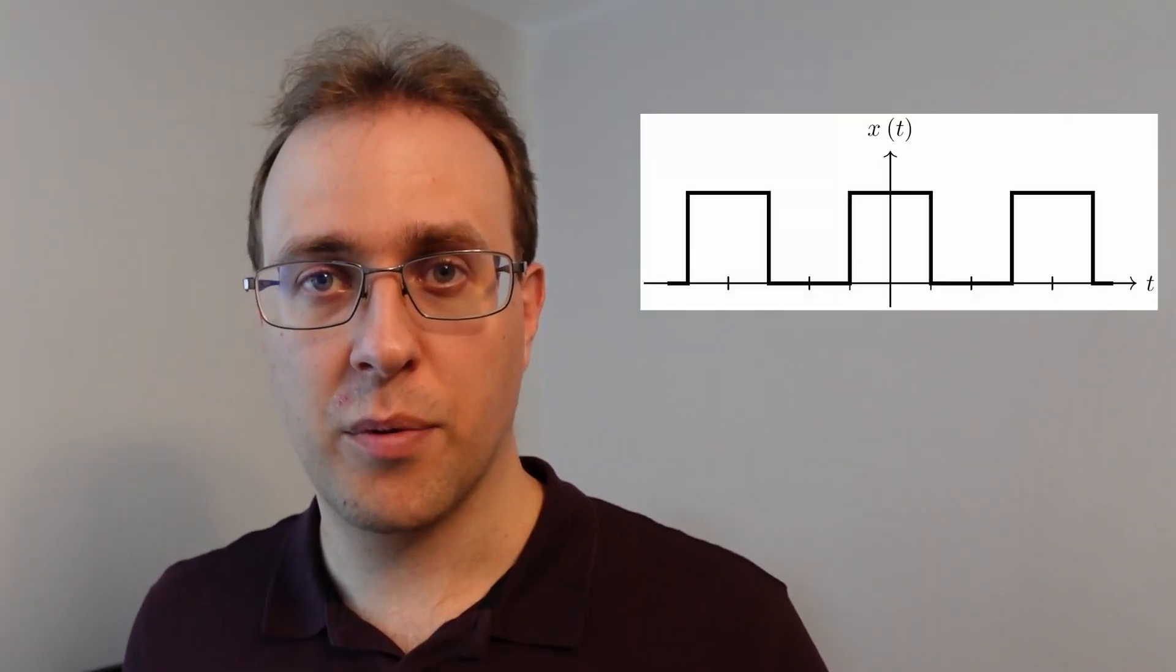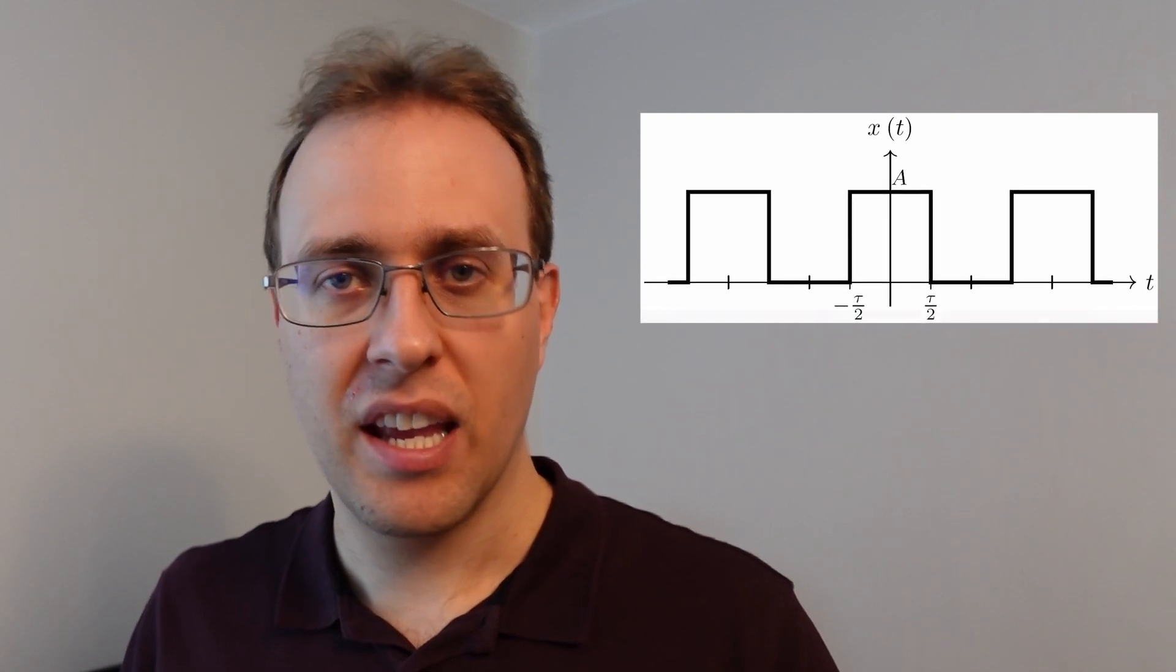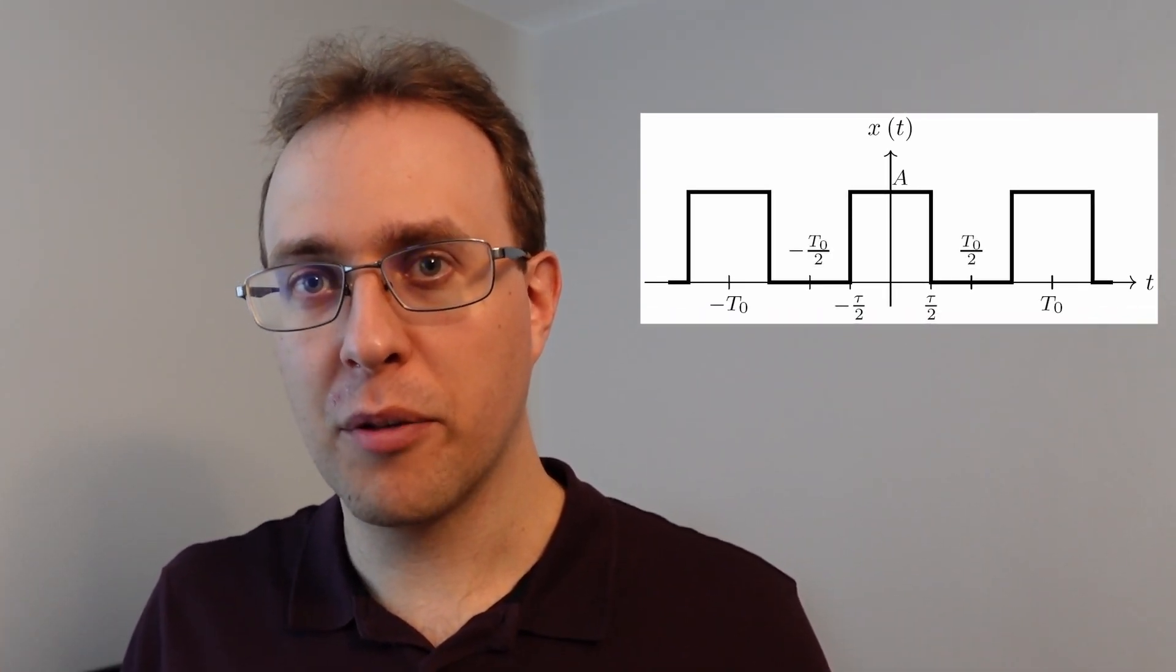Now let's consider the periodic square wave as an example for us to find the Fourier series. Let's consider a square wave that's centered at time t equals zero, it has an amplitude of A, it stays high for a period of tau seconds, and then the fundamental period is T0.